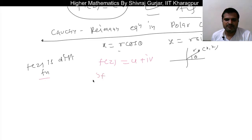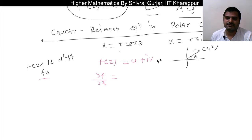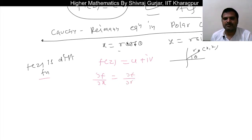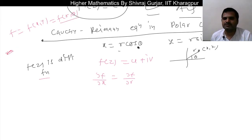We can get ∂f/∂x as follows. f is a function of x and y, and x and y are functions of r and θ, so f is a function of r and θ. We also note that x² + y² = r².